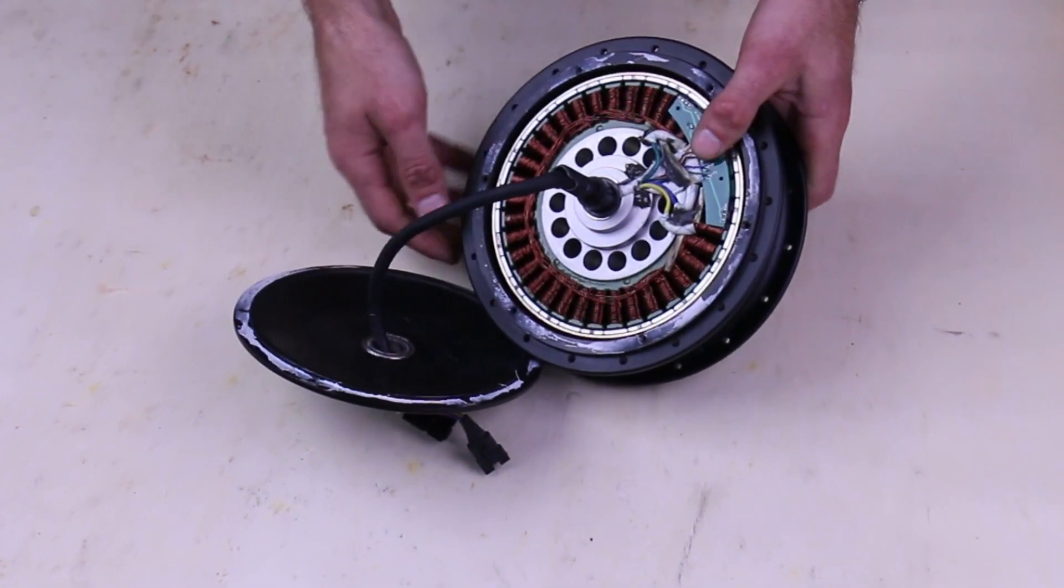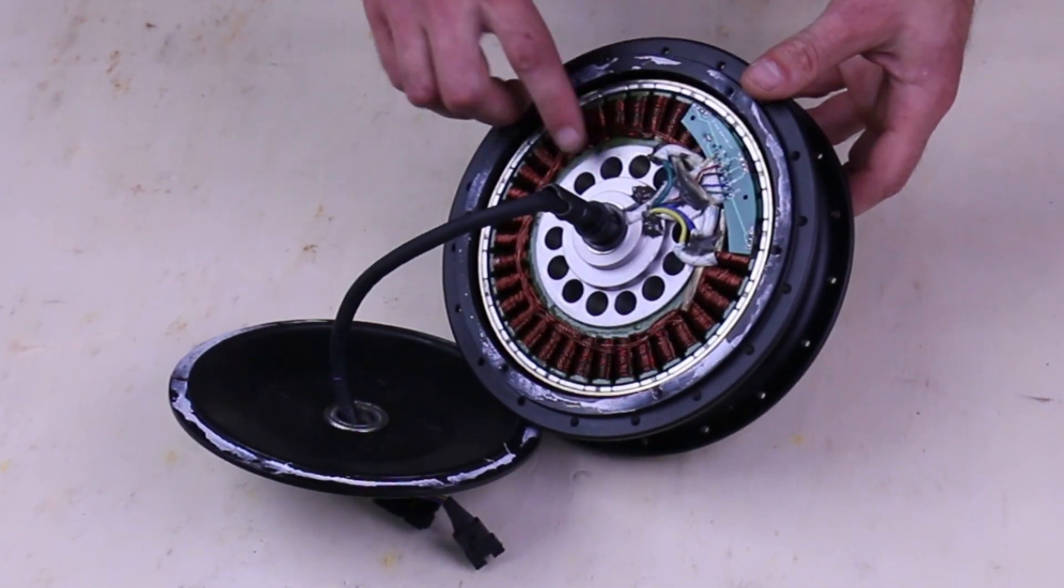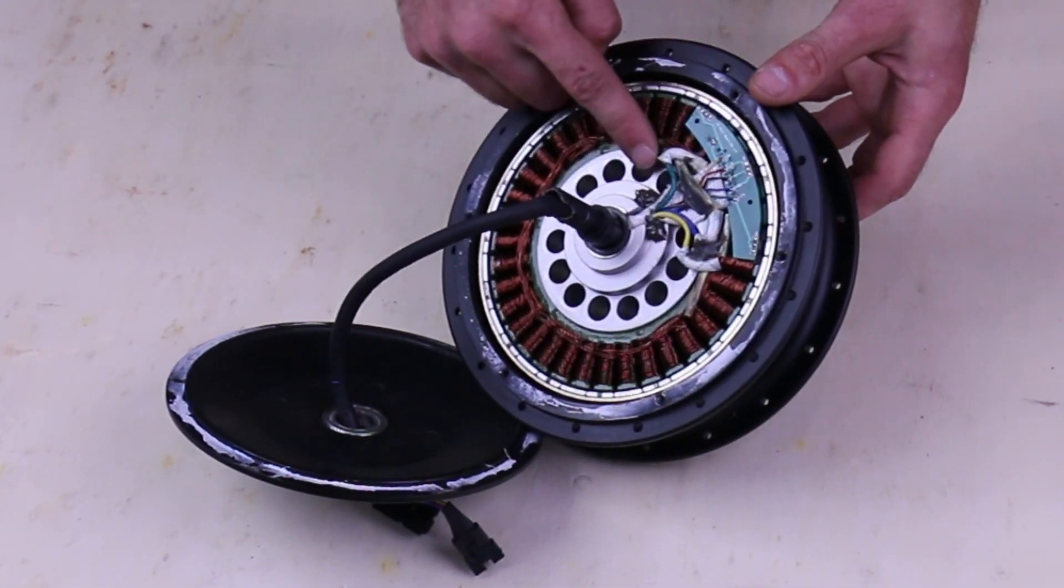So this is the motor internals. You can see here's the hall sensor board and all the hall sensors. And here's where the phase wires come into the motor.